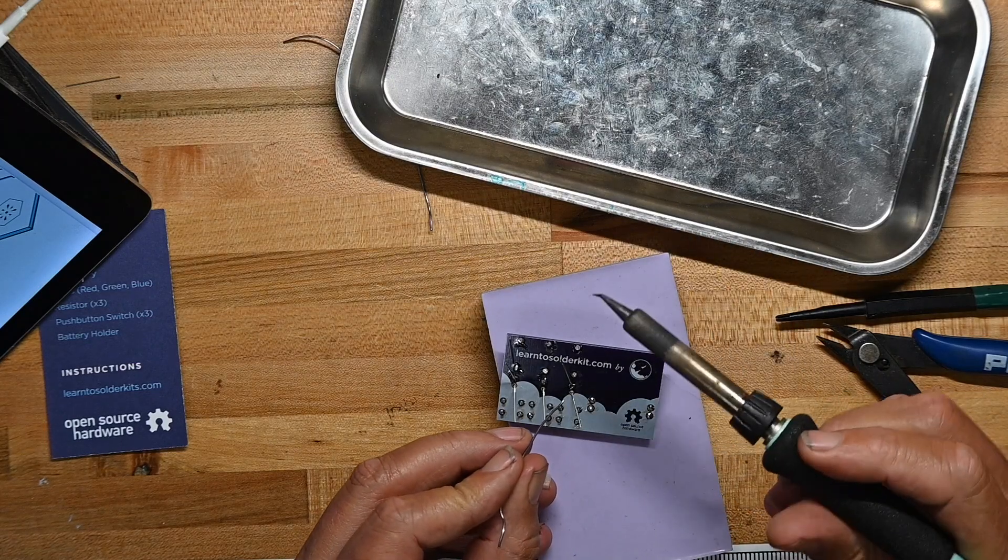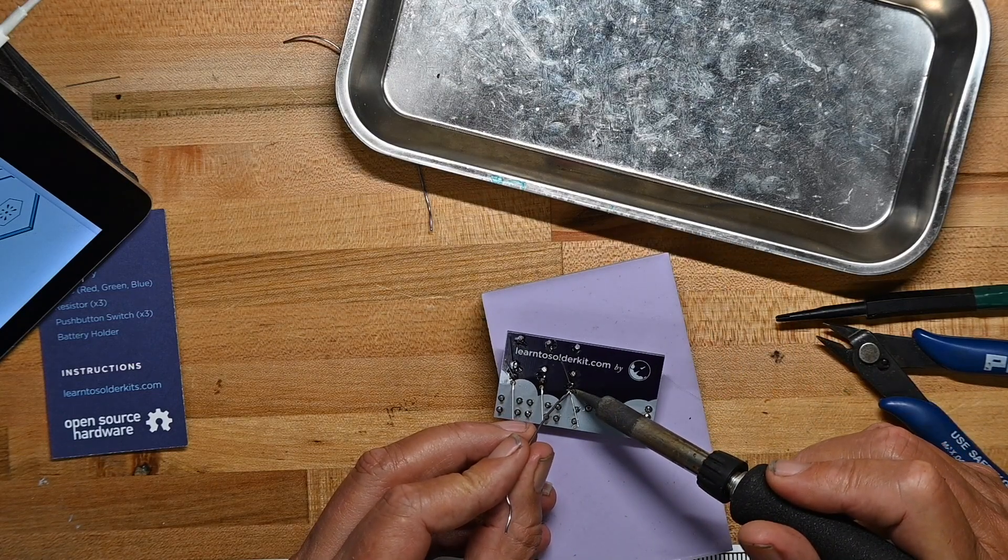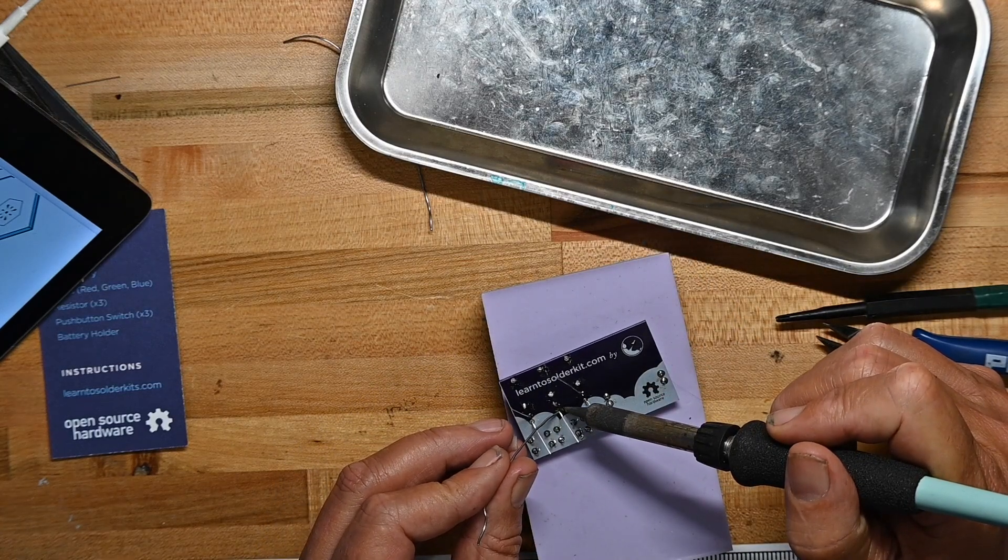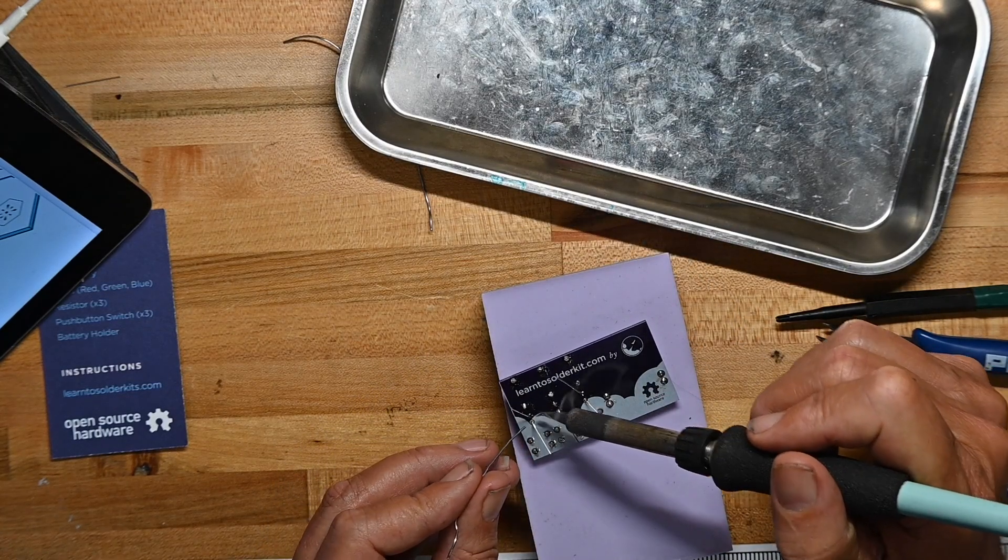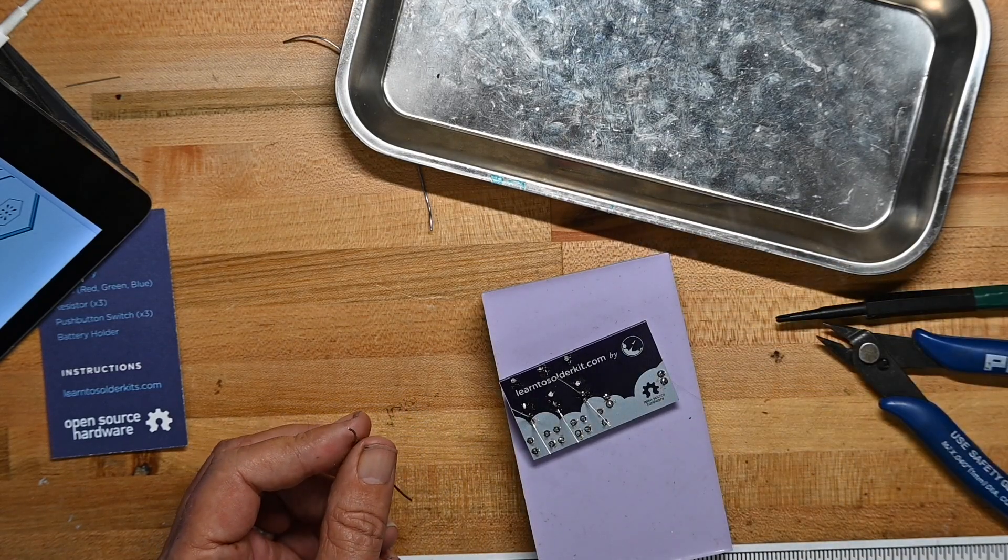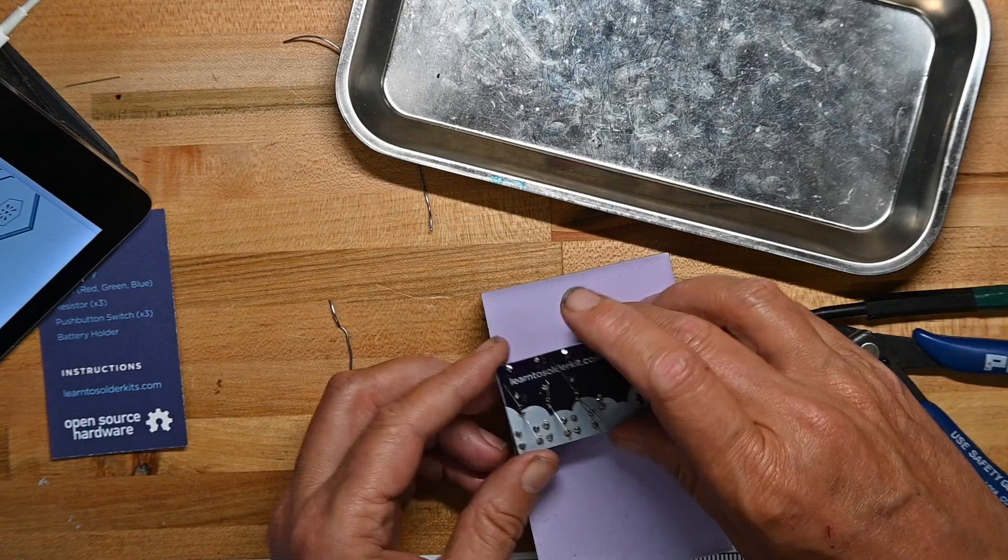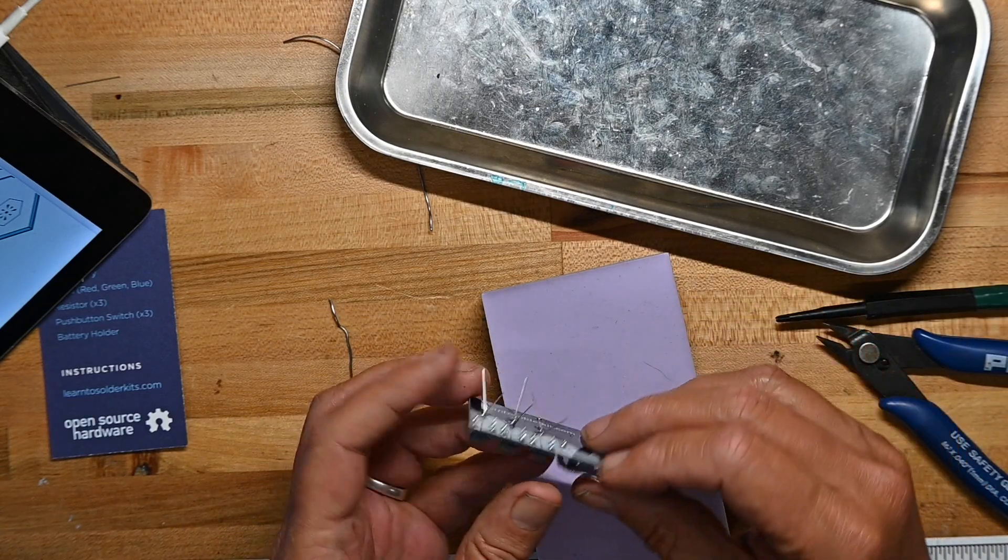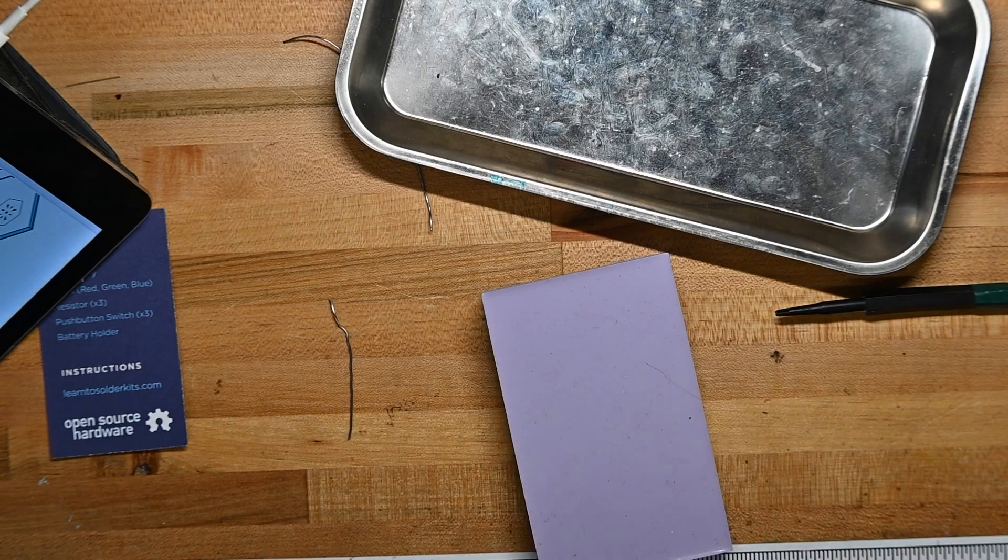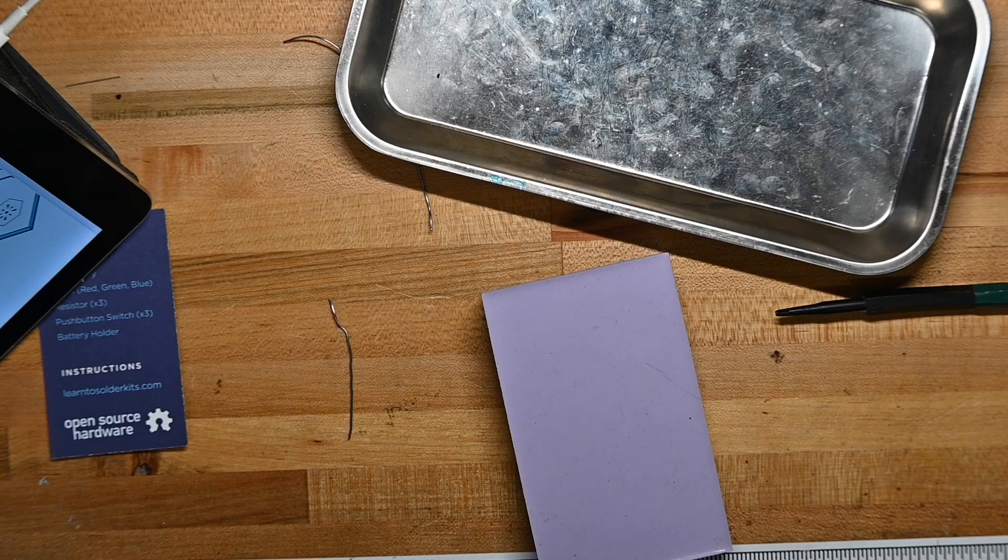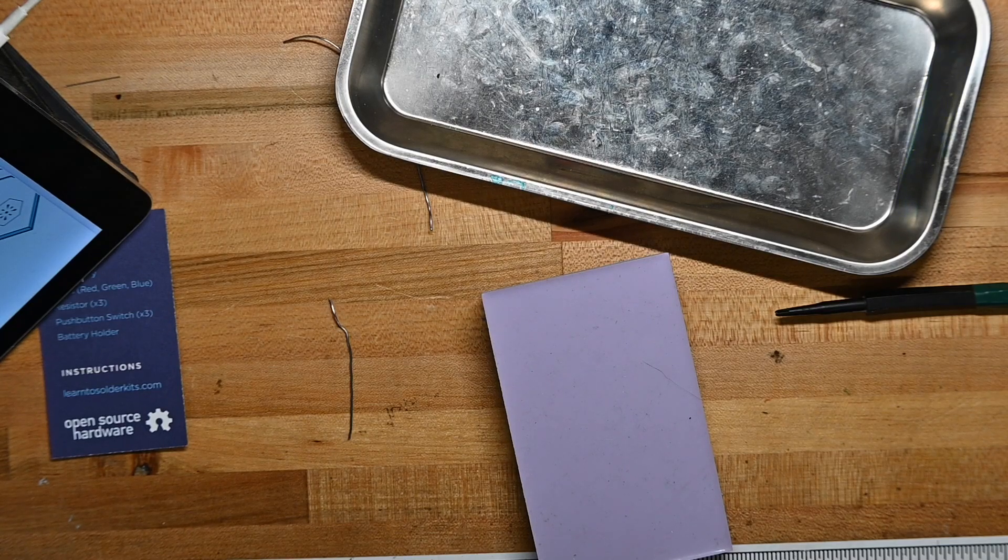Of course polarity matters with LEDs. The instructions show you how the long leg is the positive side, the short leg is the cathode and negative side. Also on the negative side there's a flat spot on the LED. So they guide you through all three ways to identify how to put the LED on correctly.